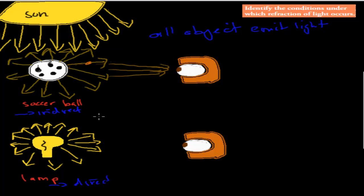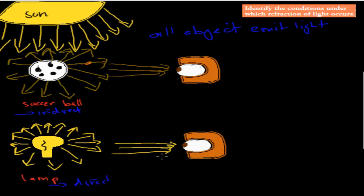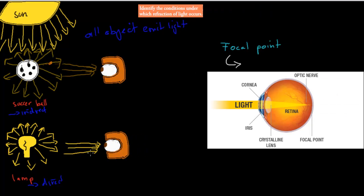Some actual objects emit their own light. The lamp would be one example — the lamp actually produces its own light, as does the sun. Those light rays will travel towards our eye. And if these objects didn't emit light, we wouldn't be able to see anything. Black just means they're not emitting light — that's what black means. Anything else is emitting light, that's why we see it in these different colors.